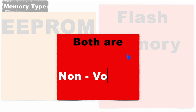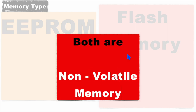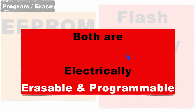The first similarity is its memory type. Both are non-volatile memories, which means they will preserve the data even during a power shutdown. The second similarity is that both can be electrically erased as well as programmed. So these two are the basic similarities between EEPROM and flash memory.